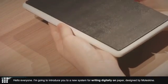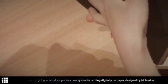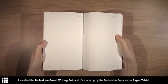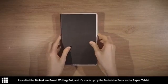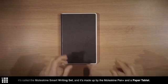Hello everyone. I'm going to introduce you to a new system for writing digitally on paper designed by Moleskine. It's called the Moleskine Smart Writing Set, and it's made up of the Moleskine Pen Plus and a paper tablet.